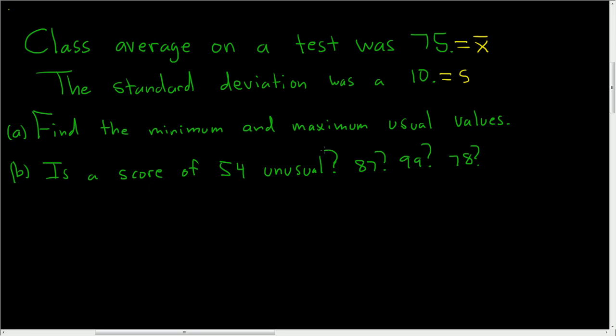In part a, we want to find the minimum and maximum usual values. This is a formula, it basically says that the minimum usual value is equal to x-bar minus two standard deviations, so 2 times s.